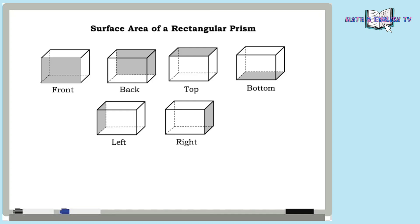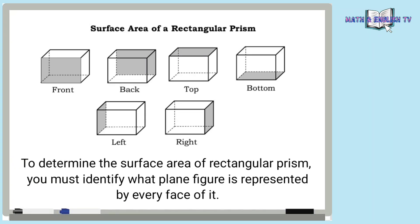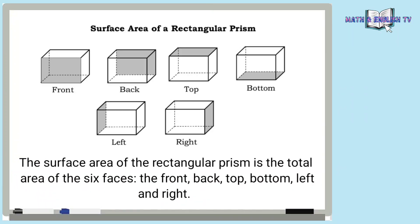Tingnan natin itong surface area of a rectangular prism. Isang halimbawa ng rectangular prism ay yung kahon ng sapatos. Yung kahon or box, mayroong siyang front side or front face, back, top, bottom, left, and right — mayroong siyang anim na faces. To determine the surface area of a rectangular prism, you must identify what plane figure is represented by every face of it. Para malaman natin ang surface area ng rectangular prism, dapat ma-identify natin kung anong plane figure o anong shape ang ipinapakita ng bawat face nito, dahil bawat shape mayroong formula kung paano kukunin yung area. The surface area of the rectangular prism is the total area of the six faces: the front, back, top, bottom, left, and right.